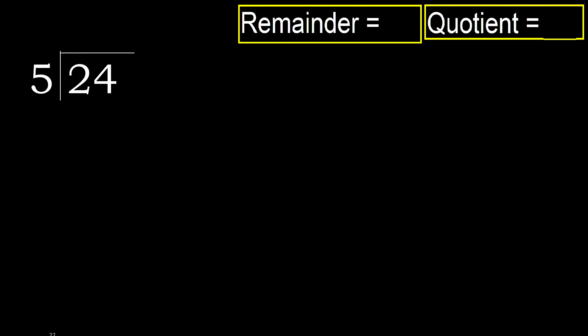24 divided by 5. 2 is less, therefore next. 24 is not less, therefore with 24, 5 multiplied by which number is nearest to 24?